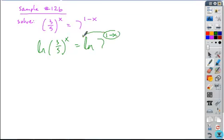I'm then going to move my powers out front. So I get x ln of 3 fifths is equal to 1 minus x times the ln of 7.